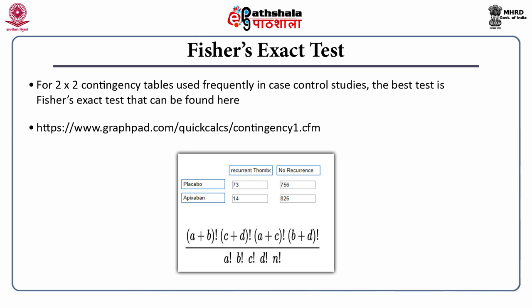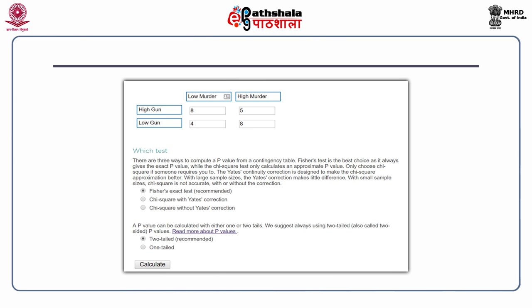Fisher's test uses the formula: (A+B)! × (C+D)! × (A+C)! × (B+D)! divided by A! × B! × C! × D! × N!. In our second example of high murder rate versus gun sales, you input the numbers and choose Fisher's exact test. The p-value — preferably two-tailed, as I explained in the confidence interval module — is calculated. It is always better to go for a two-tailed p-value if you do not know the directionality of the effect.